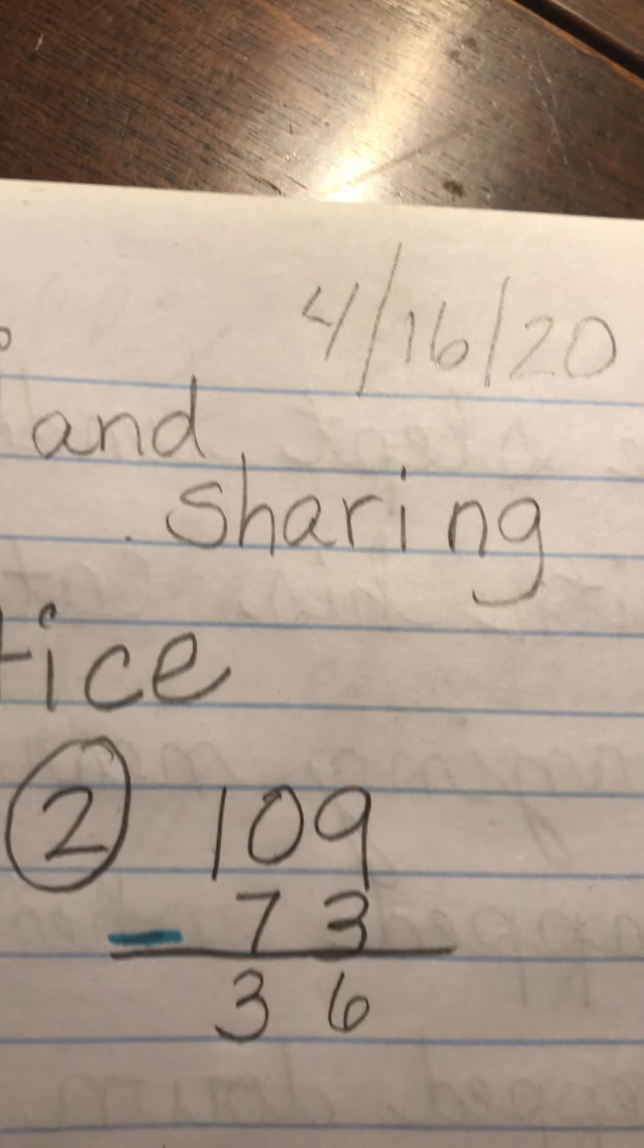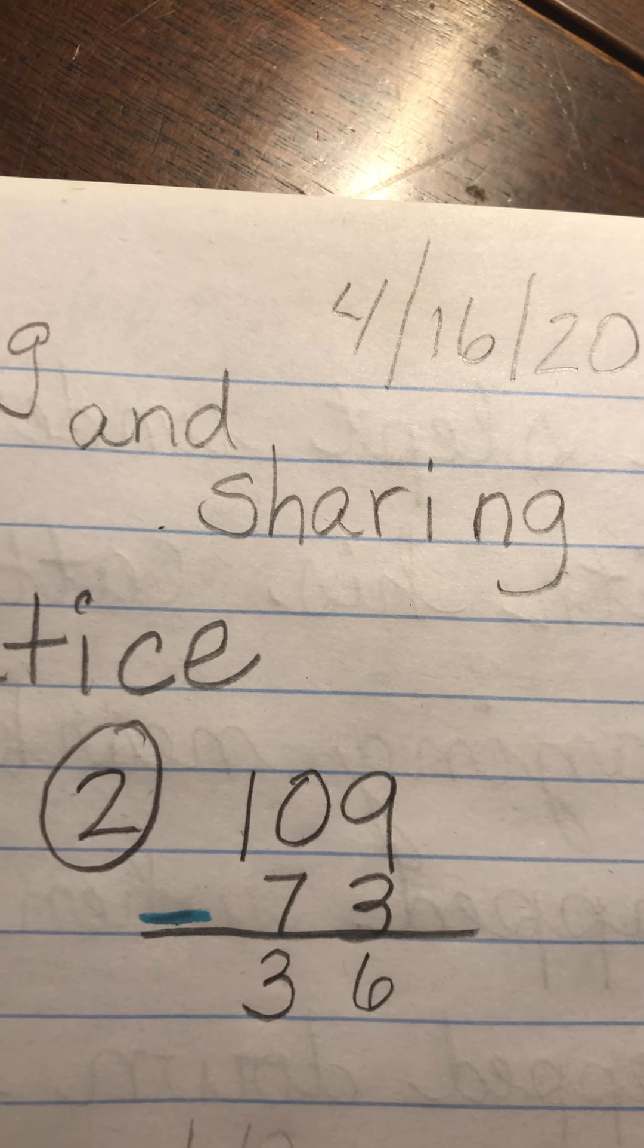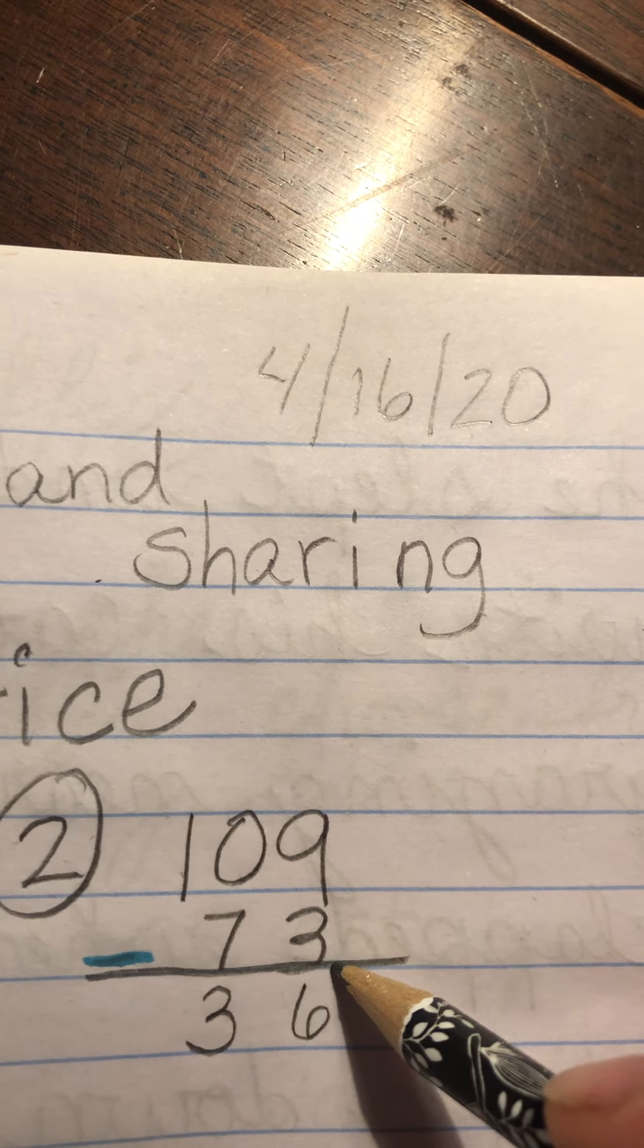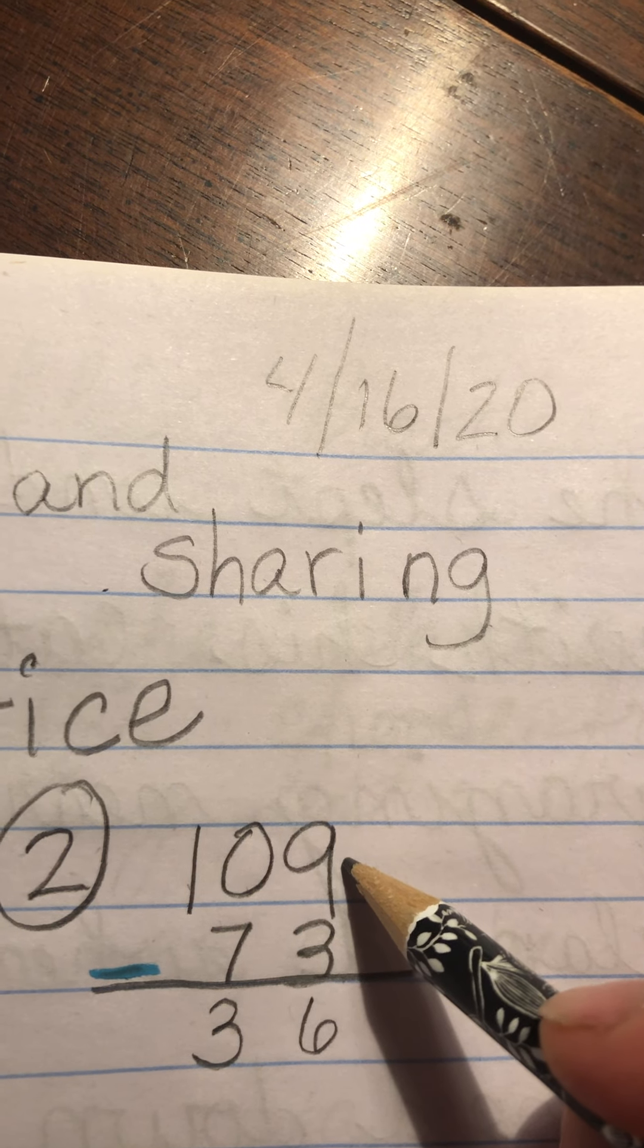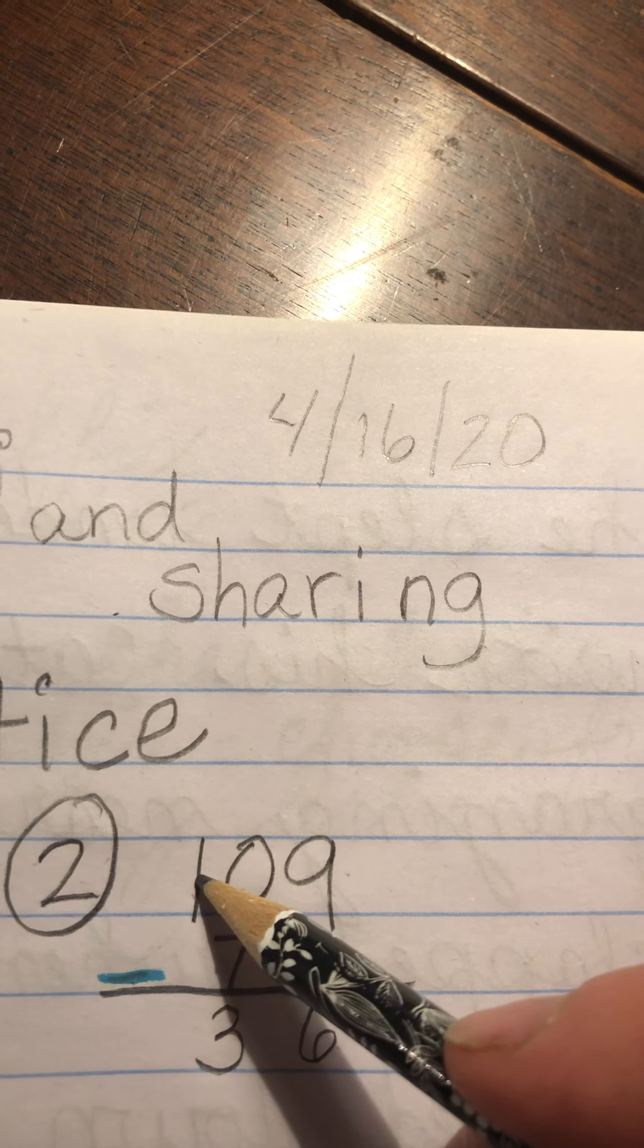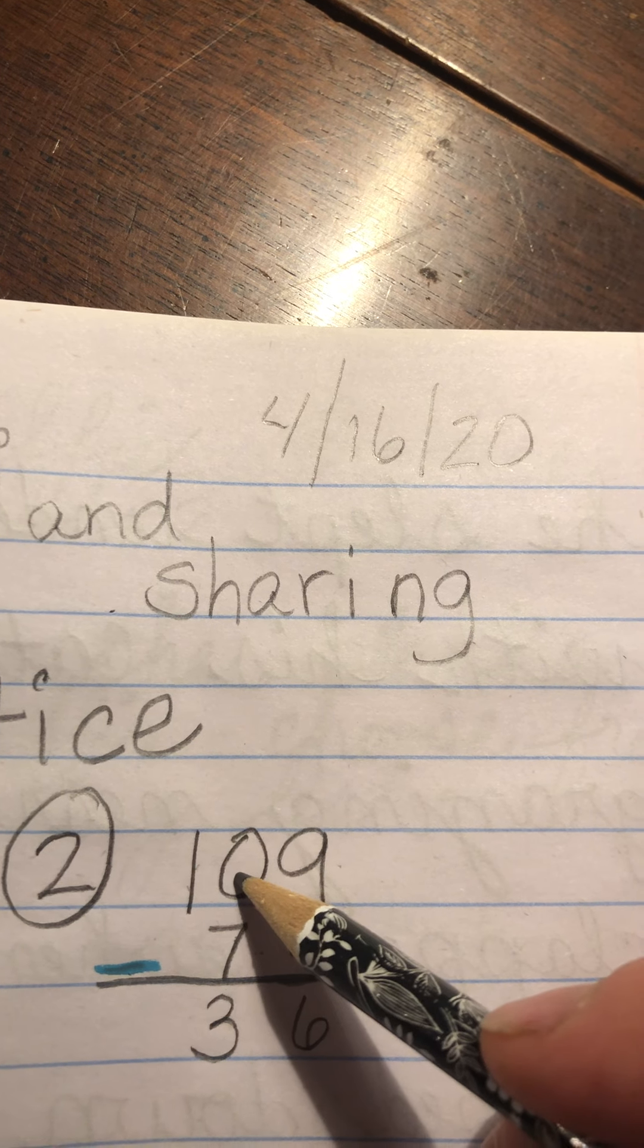And again, another subtraction problem. This one's a little simpler, because this 3 is less than the 9. So when we take away from this 9, we're left with 6. And this is a little tricky, because this isn't 10. This is 7, or 70. And this number is 109.